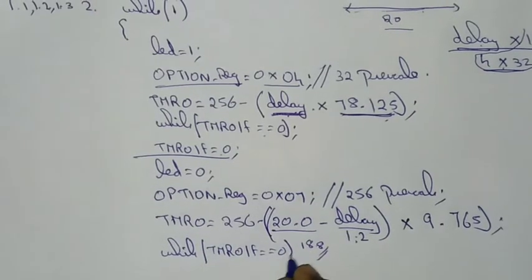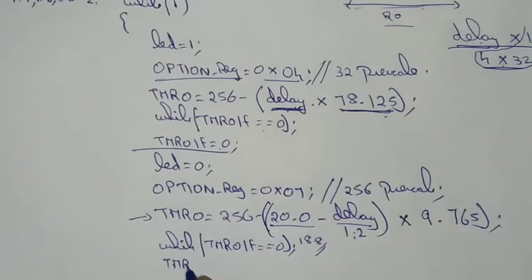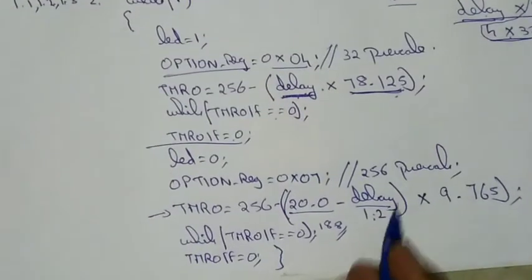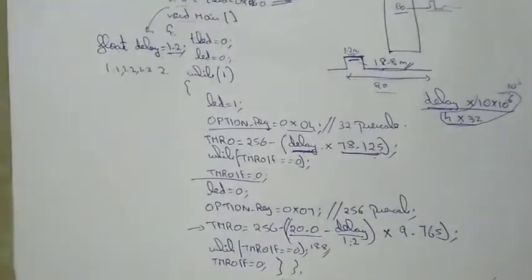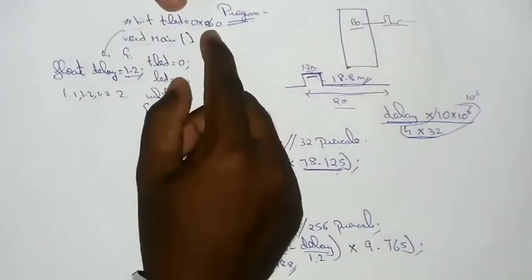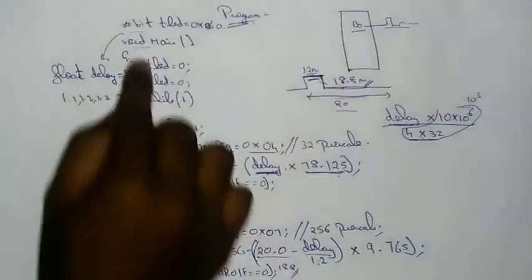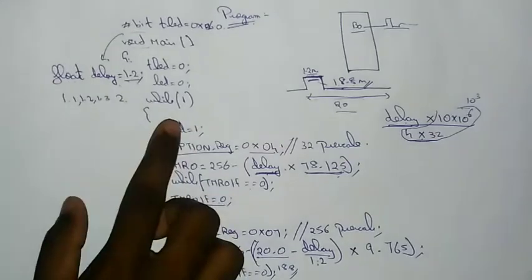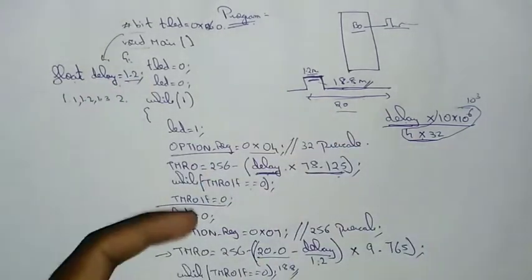While TMR0 interrupt flag equal to 0, the answer is equal to 0. You cannot change the name under the void main. Within here, we need to set a timer, we need to open the timer, declare the output of the void main — the default is 0. In the while of one, the void main is 1.2 — declare the float delay, declare the float 1.2 in the decimal point.